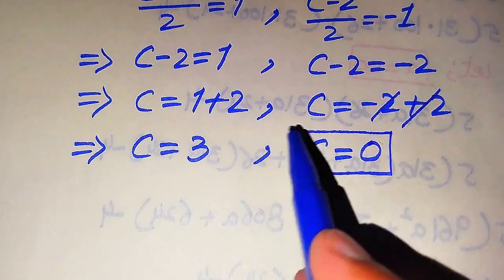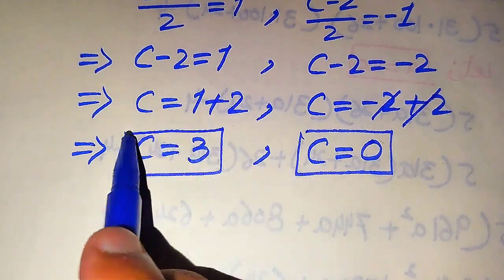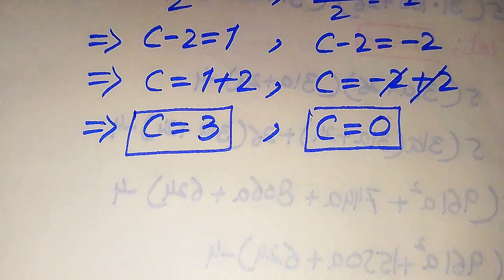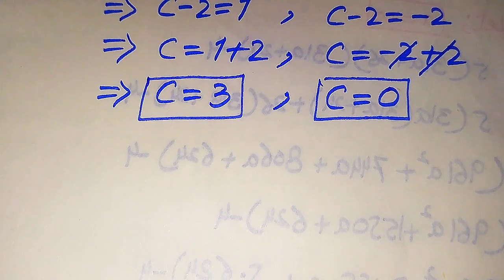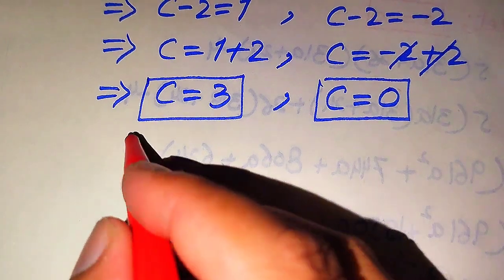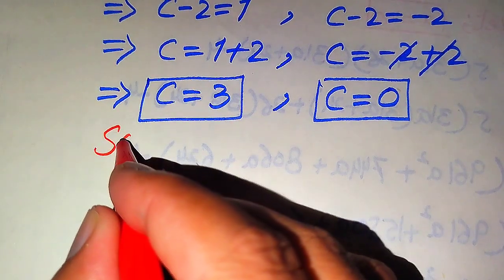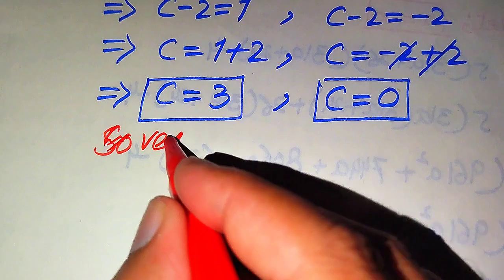Both methods give the same roots of the given equation: c equals 0 and c equals 3. Now in the next step we need to verify the solutions of this equation.